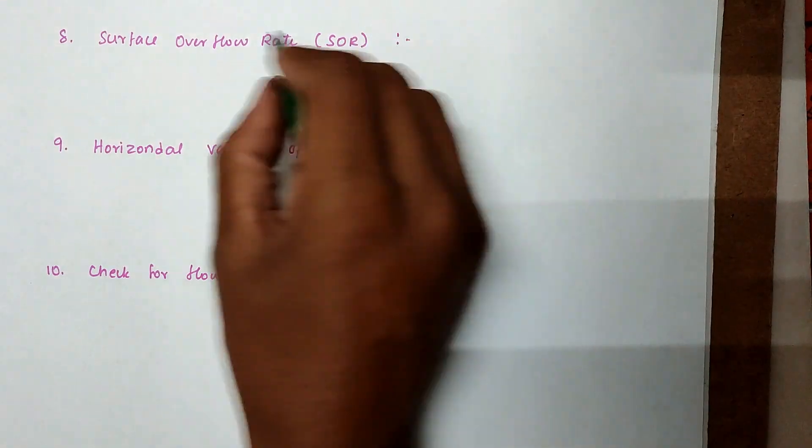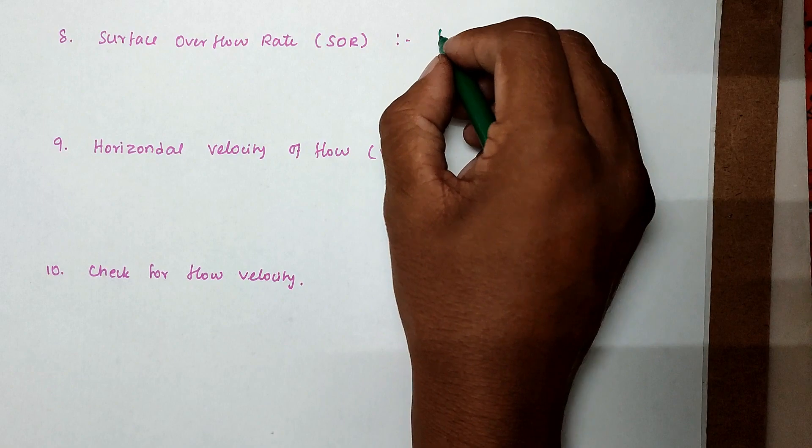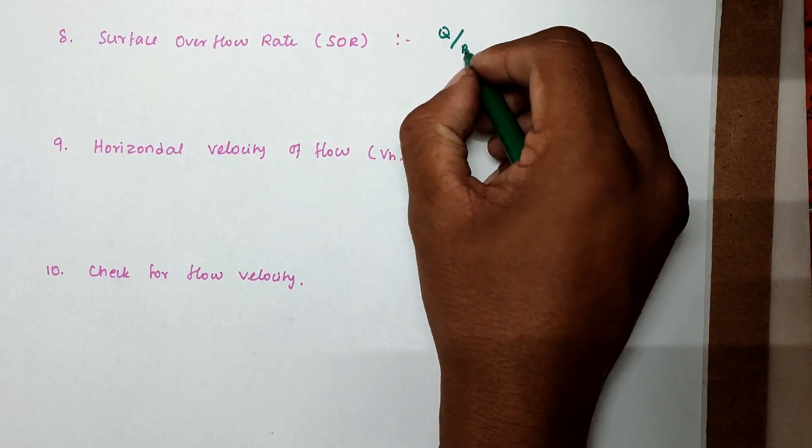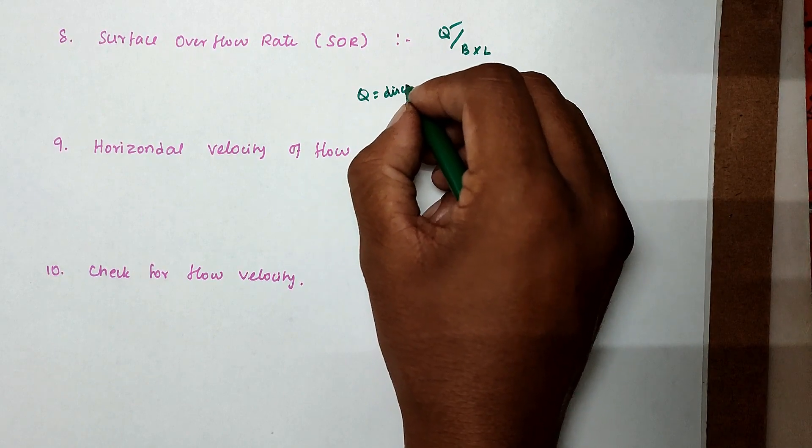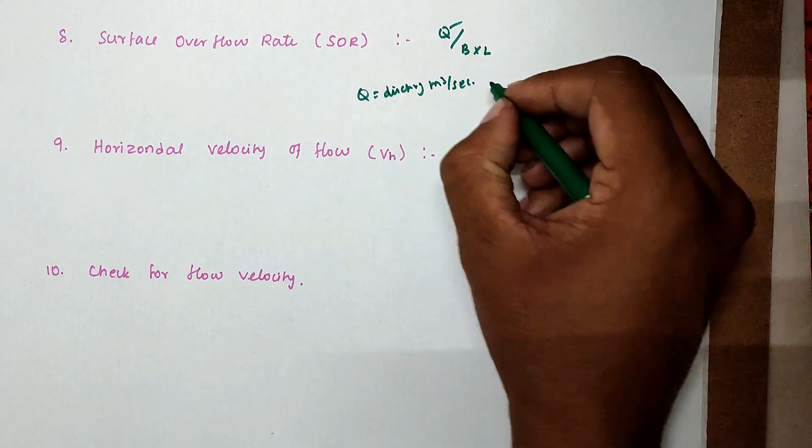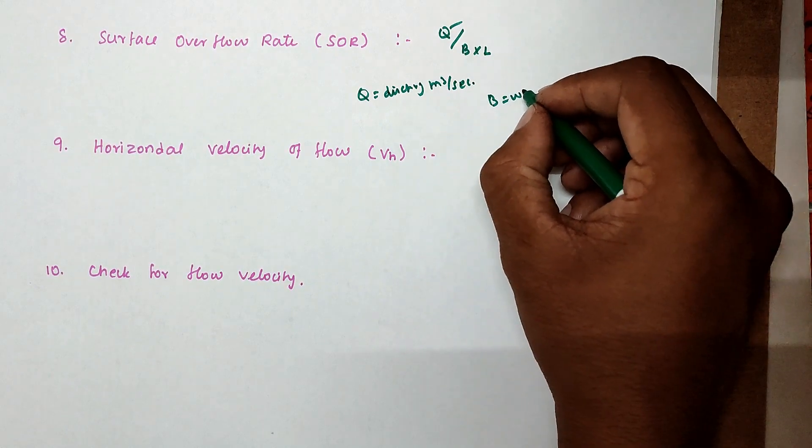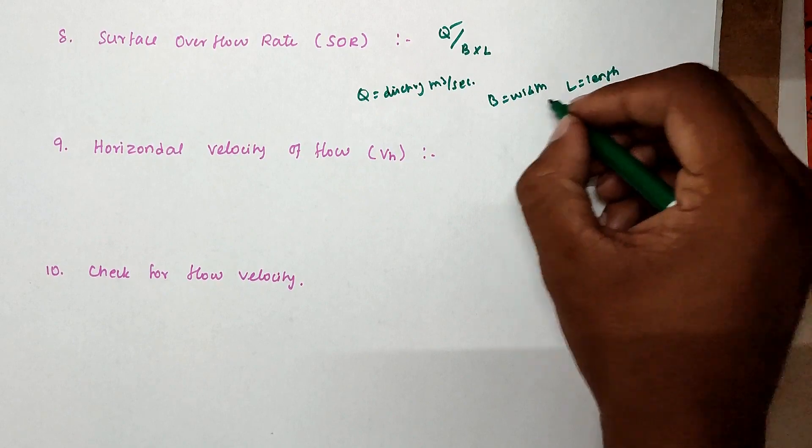Next thing is surface overflow rate, the SOR value. The value is Q divided by B × L, where Q is discharge in meter cube per second, B is width, and L is length, both in meters.